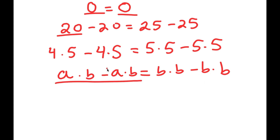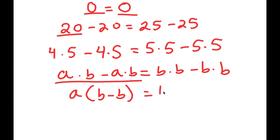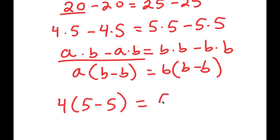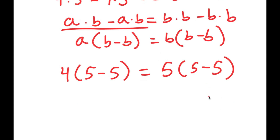For the left hand side, I'll factor out 4, giving 4 times the quantity 5 minus 5. For the right hand side, I'll factor out 5, giving 5 times the quantity 5 minus 5. So now I have 4 times 5 minus 5 equals 5 times 5 minus 5.